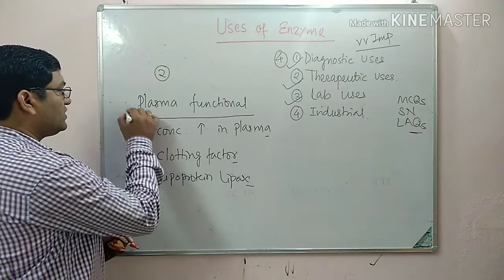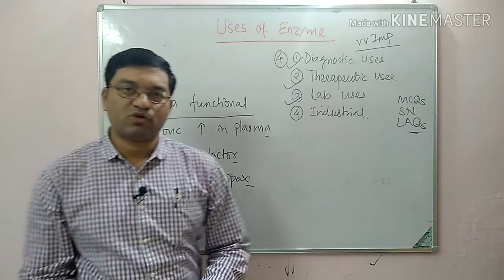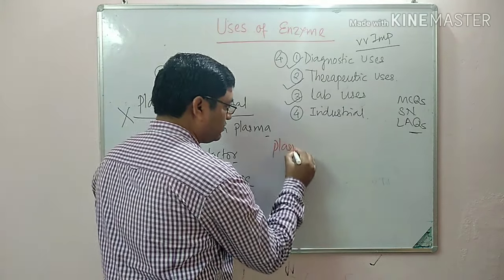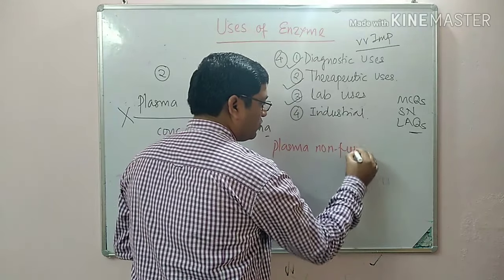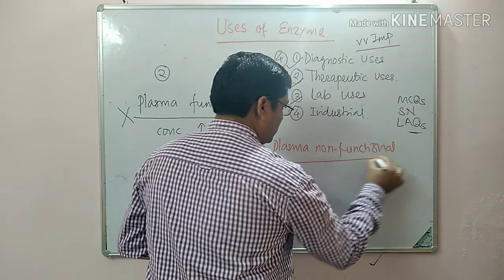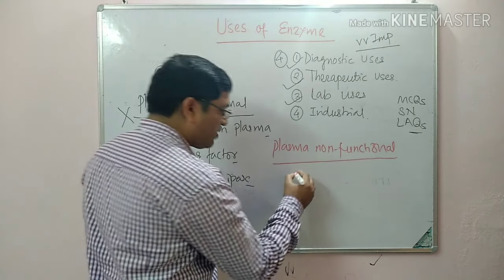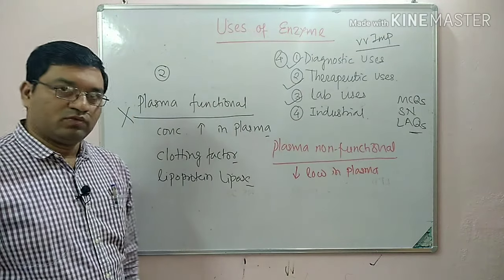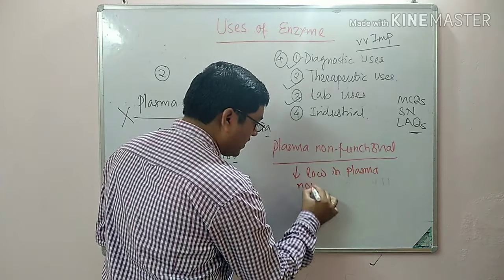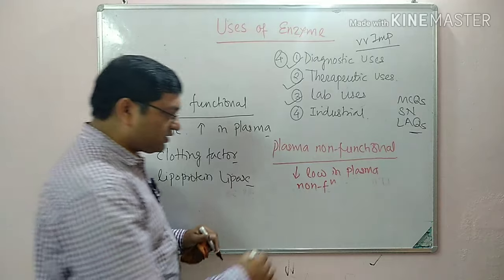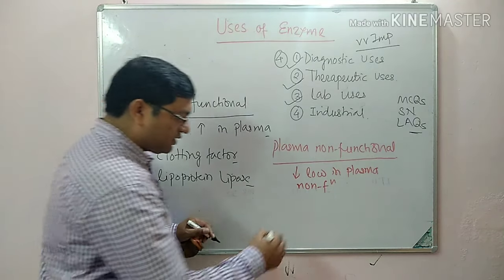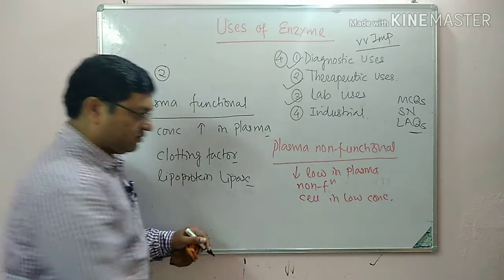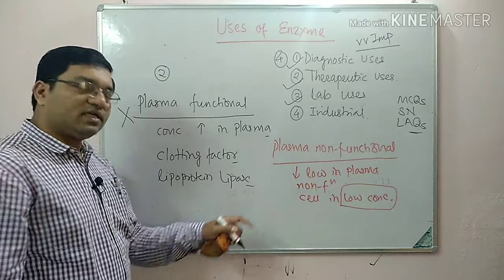The concentration of plasma-functional enzymes in cells is negligible. This group of enzymes is not useful in the diagnostic uses of enzymes. The other group is plasma non-functional or non-specific enzymes. The concentration of these enzymes in plasma is low, and they are non-functional in plasma. Their concentration in cells is higher than in the plasma.